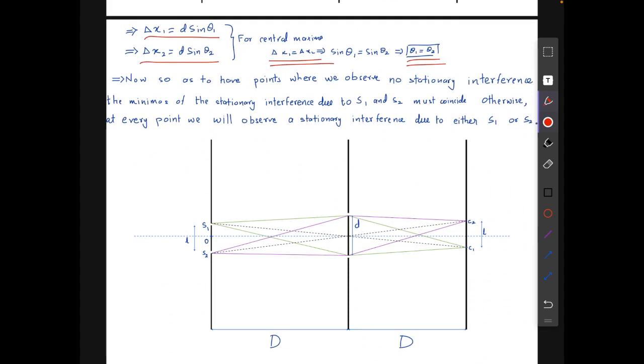To have points where we observe no stationary interference, the minimas of the stationary interference due to S1 and S2 must coincide. Otherwise, at every point we will observe a stationary interference due to either S1 or S2. What this means is, let's say the interference pattern of S1 is something like this.